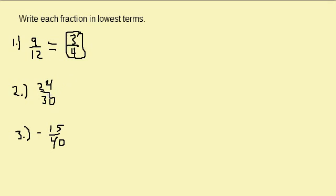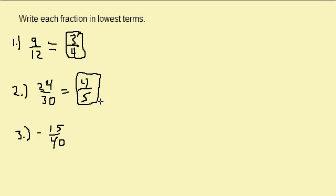Now what's the largest number that will divide into the numerator and denominator evenly for number 2? Well, that would be 6. 6 goes into 24 four times, 6 goes into 30 five times. So here's our answer: 4 fifths.